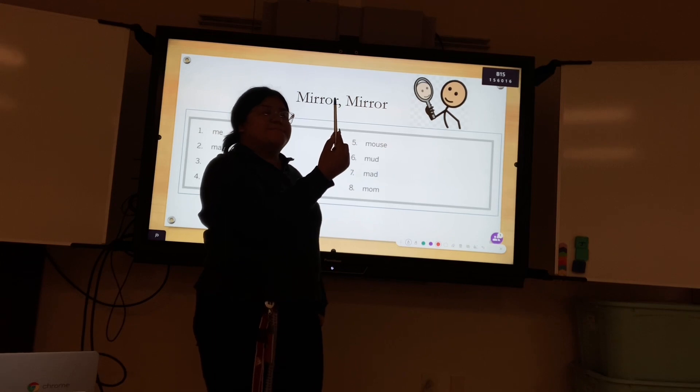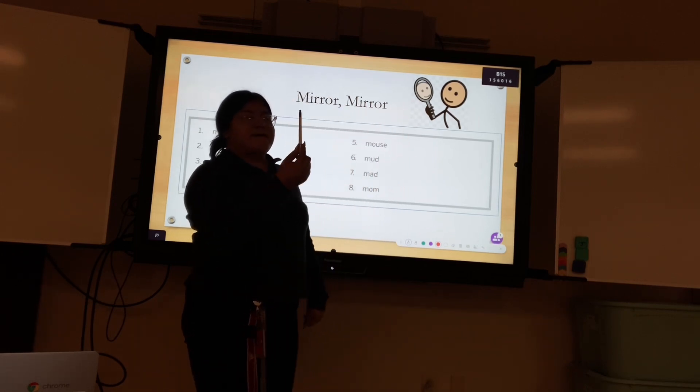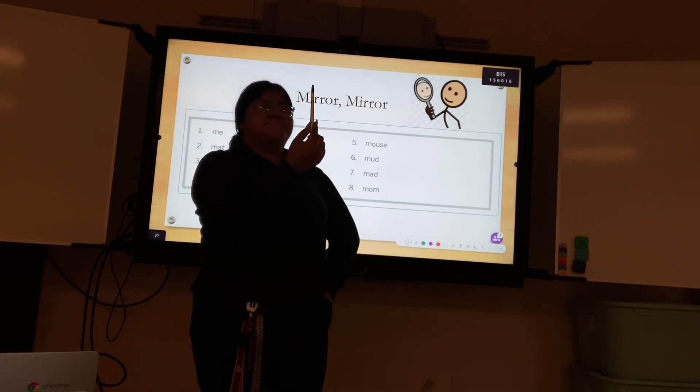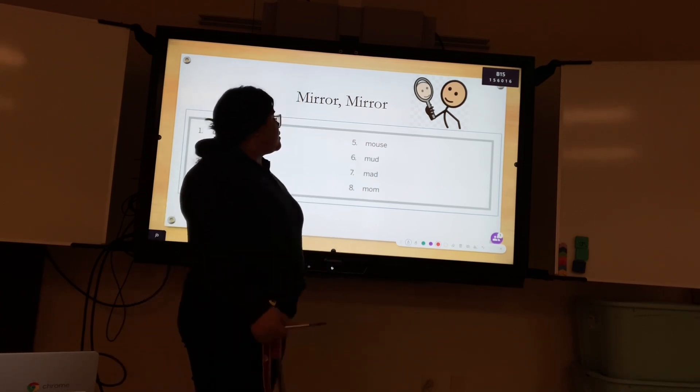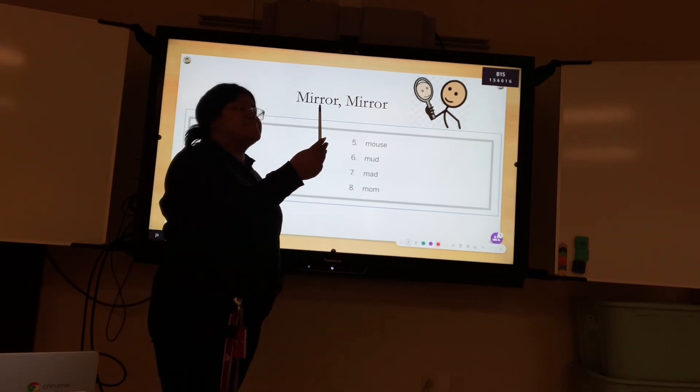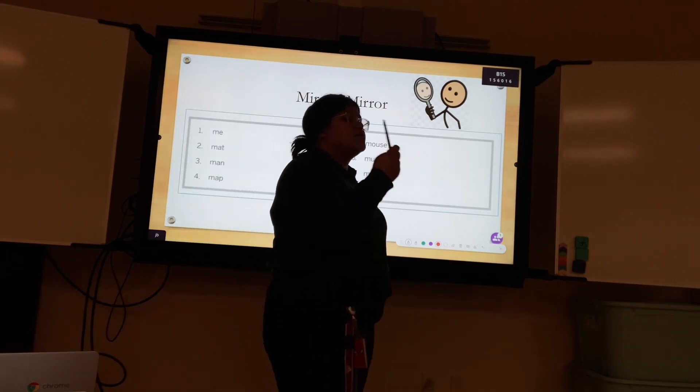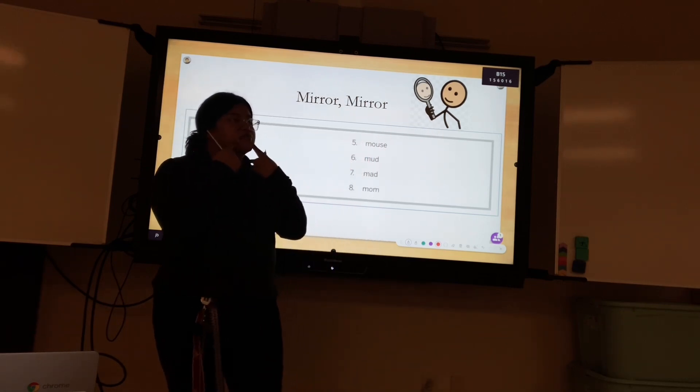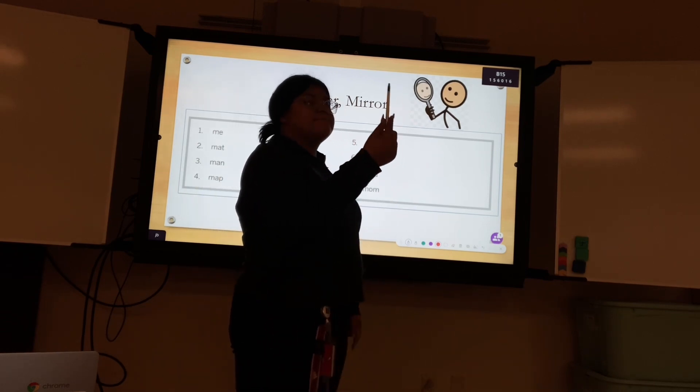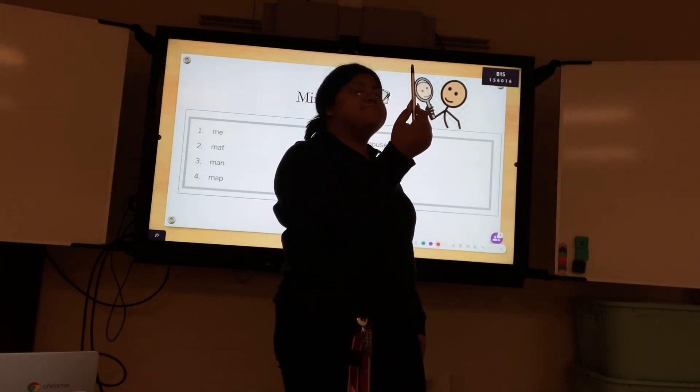Map. You see your syllables now. You're still looking at yourself. Number five. Mouse. Mouse. Number six. Mud. Mud. And number seven. Man. Man. Do you see how your mouth is not moving? I'll go for the last word. Mom. Mom.